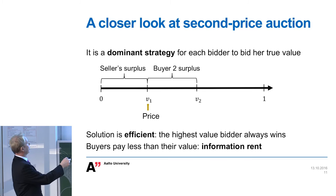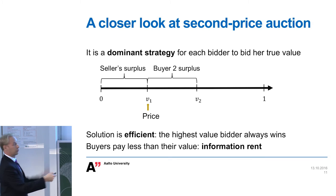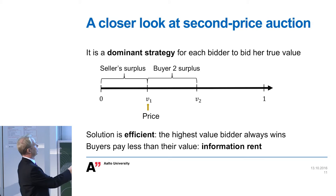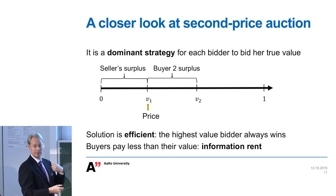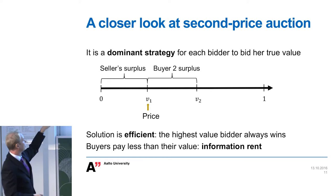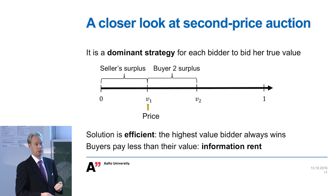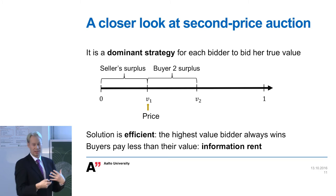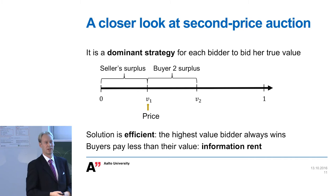In this figure, you can see one possible scenario with two players, one with value V2 and one with value V1. The price is defined by the second highest value. The difference between V2 and V1 is the buyer's surplus — he doesn't have to pay what he actually values. The seller gets the price as revenue. There are two important properties: first, it's efficient, meaning the object goes to the one who values it most. Second, the seller has to accept less than the full value — this is the information rent the buyer gets because only he knows his true value.